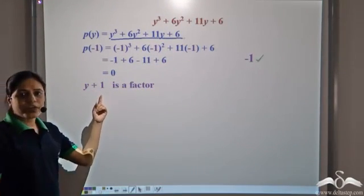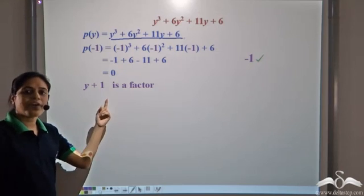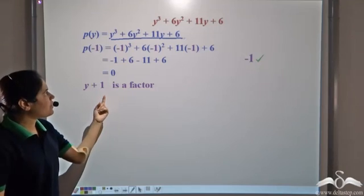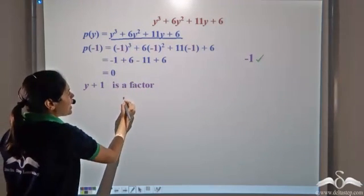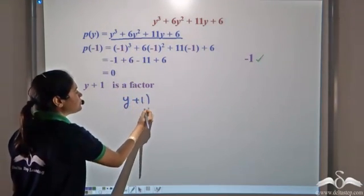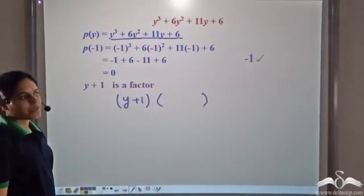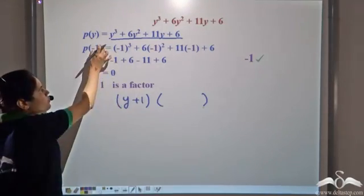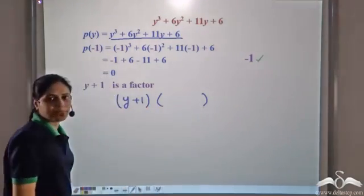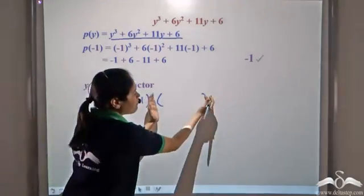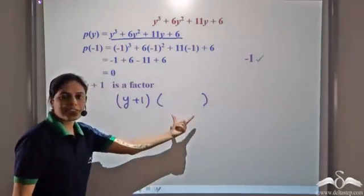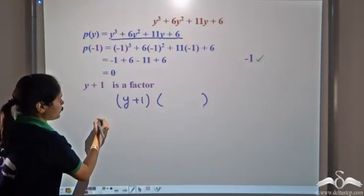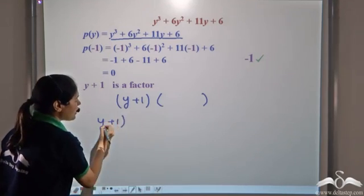Now there are two ways to proceed. One way is to find the other factors using hit and trial. The second way is to write p(y) as y plus one times something, since we have already established y plus one as a factor. If we can find that something, we can factorize p(y) and get the other factors.